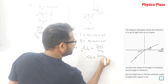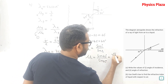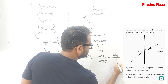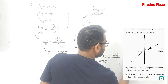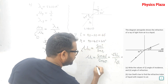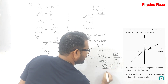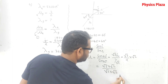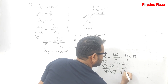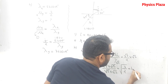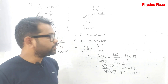So μ_liquid = sin 60° / sin 45° = (√3/2) / (1/√2) = √3·√2/2 = √6/2, or approximately 1.22. This is how we solve numericals based on exercise 4A. Now we will see the numericals from exercise 4B.